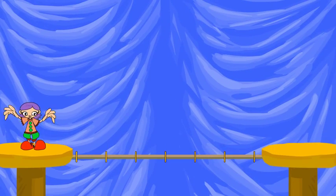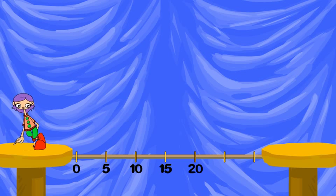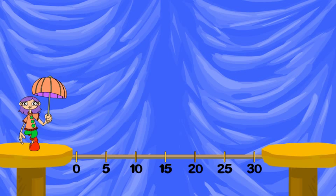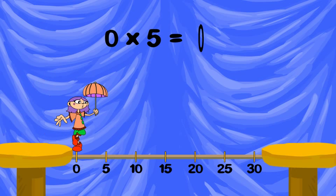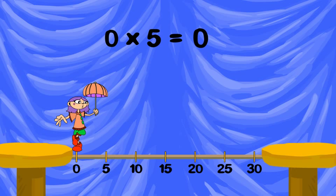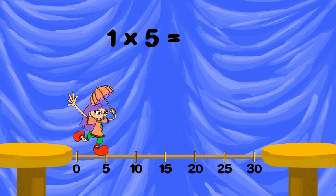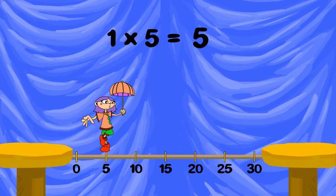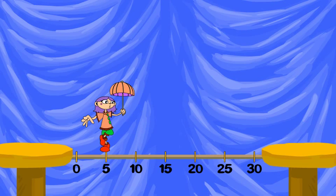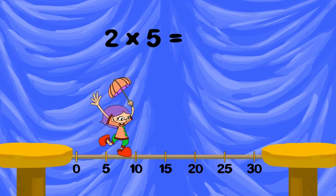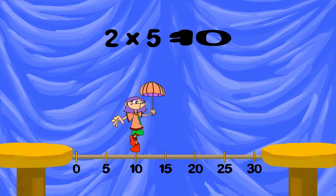Zero groups of five is zero — that's the zero property. One group of five is five — that's the identity property. Two groups of five is ten.